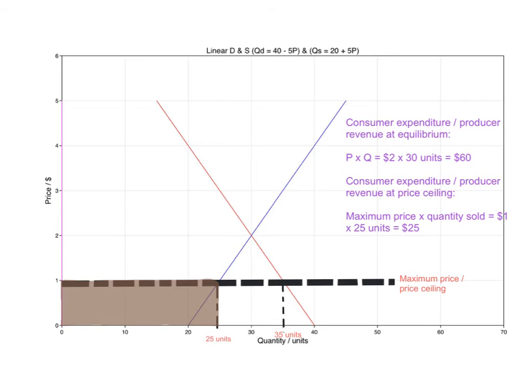The consumer expenditure or producer revenue at the price ceiling: you take that maximum price which is $1 and multiply it by the quantity that will actually be sold, the quantity supplied which is 25 units. So $1 times 25 units gives you a consumer expenditure or producer revenue of $25, and it is represented by this rectangle here that is shaded in brown.